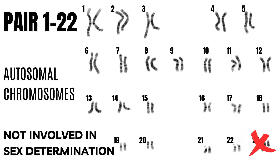Autosomal pedigrees track genetic traits located on the autosomal chromosomes, i.e. chromosomes 1 to 22. In other words, traits that are not affected by the sex of the individual.